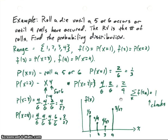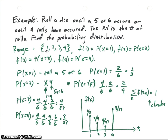Let's look at an example of a discrete random variable and find the probability distribution function. We roll a die until a 5 or 6 occurs, or until we've rolled 4 times — if we roll 4 times without getting a 5 or 6, we stop. The random variable is the number of rolls. Since we're rolling up to 4 times, the range space is 1, 2, 3, or 4 — those are the only possible outcomes.